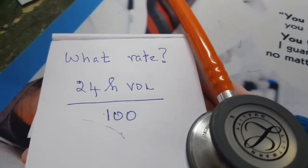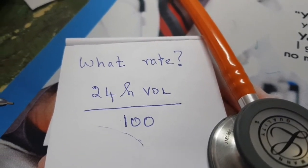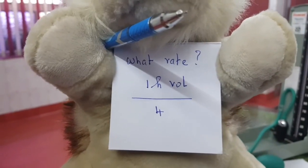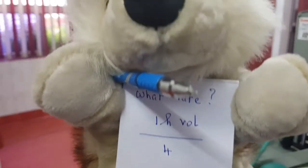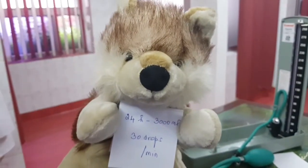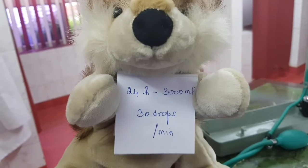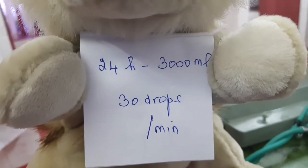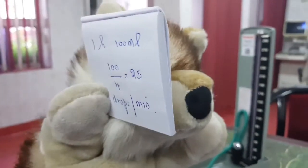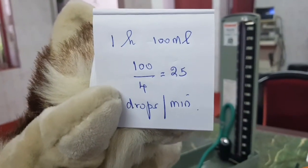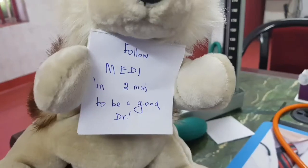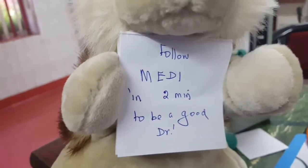About the rate: any 24-hour volume divided by 100 gives you drops per minute. Any one-hour volume divided by 4 gives drops per minute. So if you have calculated 3000 ml, divide by 100 — that's 30 drops per minute for 24 hours. If you have calculated 100 ml for one hour, divide by 4 — that gives 25 drops per minute. And any drops per minute multiplied by 4 gives you micro-drops.